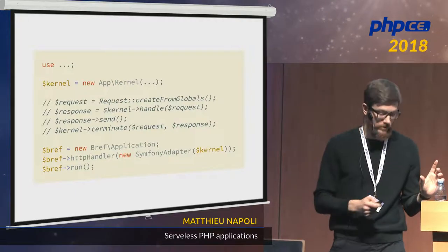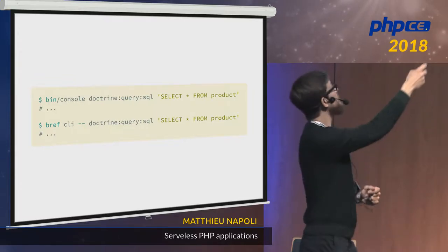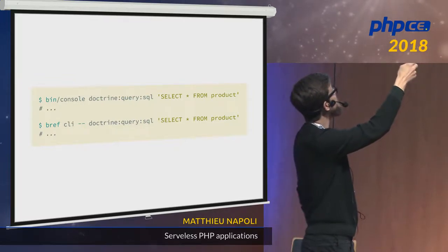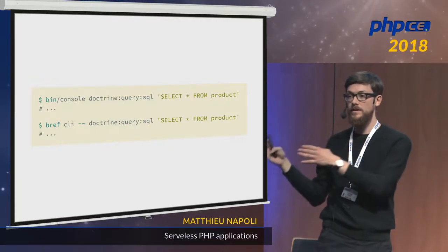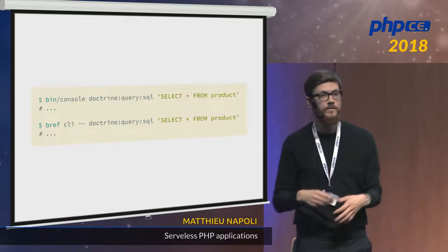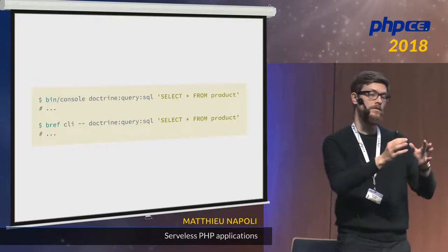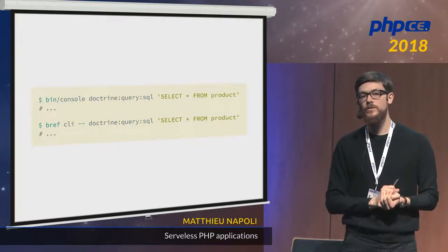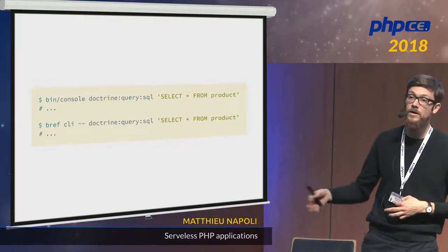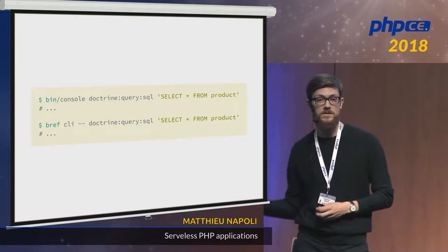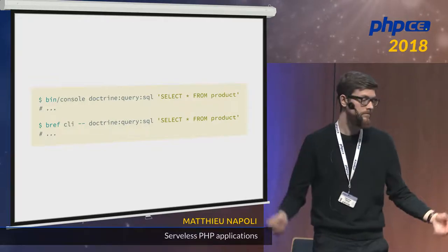I also want to show a small tool I love: for the Symfony console, you have bin/console and your command. You can replace it with bref CLI. BREF CLI basically takes the command and runs it in a Lambda. This is very useful for doctrine migrations and similar things you want to run in production or staging, because there is no SSH access — there is no server running, no SSH. So this is pretty useful for maintenance.